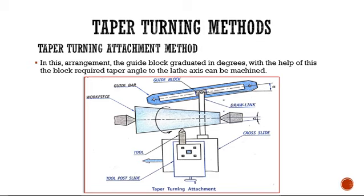In the taper turning attachment method, no angle is given to the compound slide and the tailstock is not lifted off the lathe bed. A separate attachment is fixed to the compound slide, carrying the required angle alpha. This attachment is directly linked to the compound slide, so during carriage movement, the tool post automatically glides perpendicular to the axis, imparting that angle as shown in the figure.